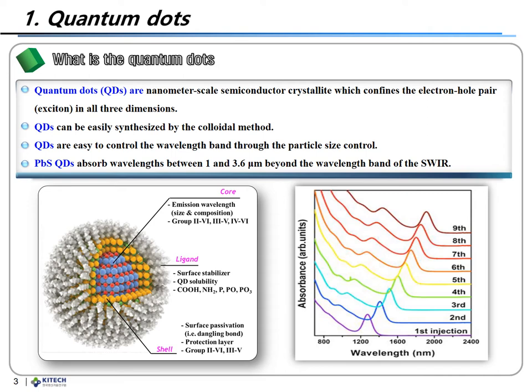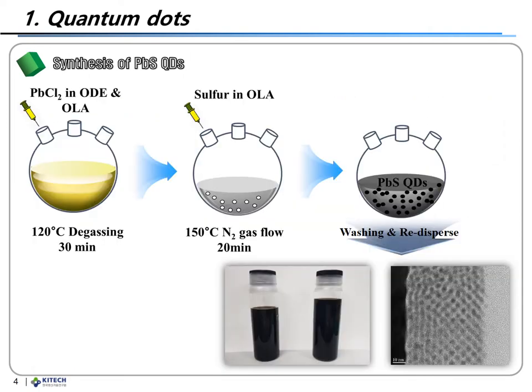Especially, PbS quantum dots observe wavelengths between 1 and 3.6 micrometers, beyond the wavelength band of the SWIR. PbS quantum dots were synthesized by the colloidal method as shown in the figure and were dispersed in toluene at a concentration of 13 mg per ml.